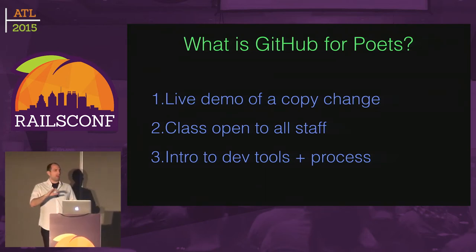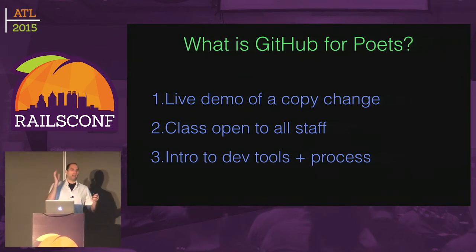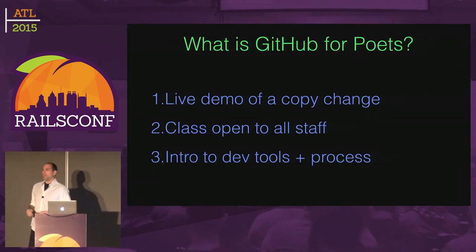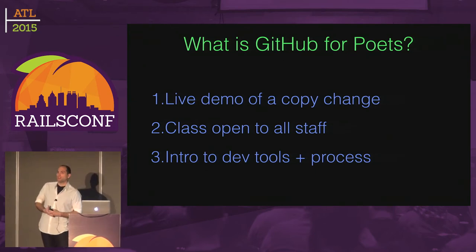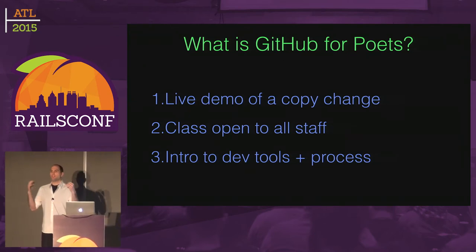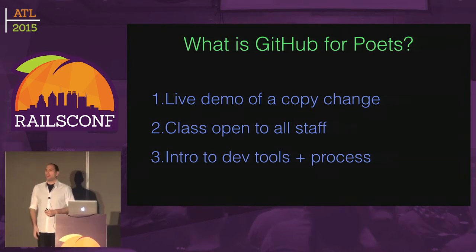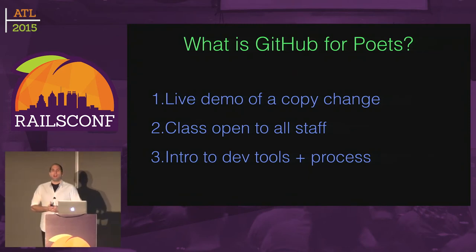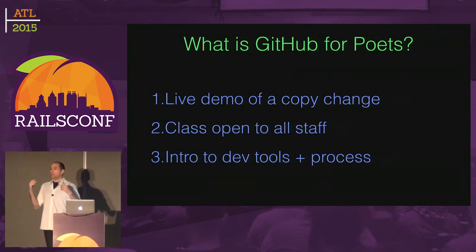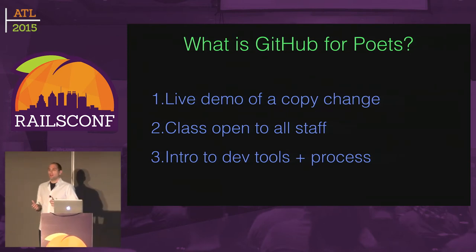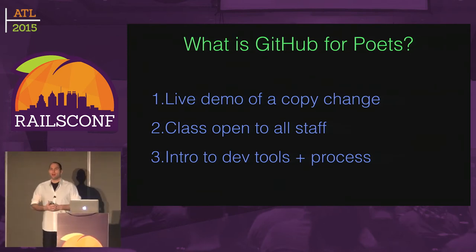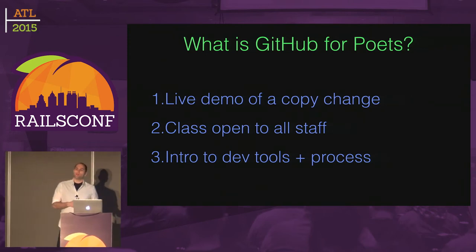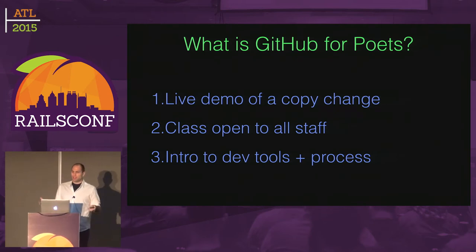The name GitHub for Poets is a reference to a Physics for Poets class at a lot of liberal arts schools — an elective geared towards people who weren't going to become physics majors, but wanted to know something about electromagnetism and relativity as part of enriching their lives. The idea here is that there are lots of people in our organizations who aren't expected to be doing Rails development or working with GitHub day-to-day, but knowing something about it can really improve their workflow.